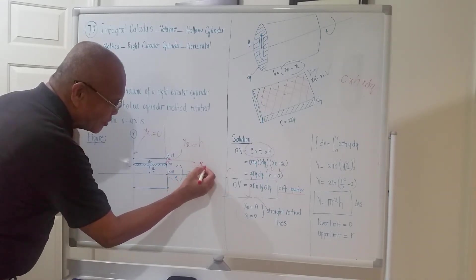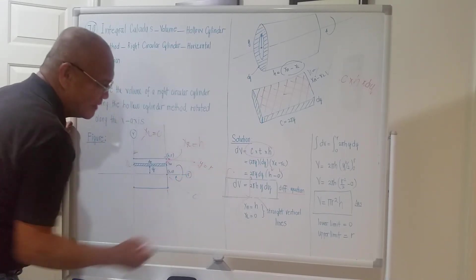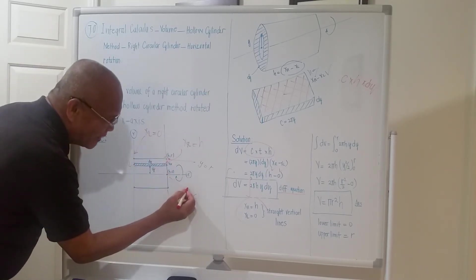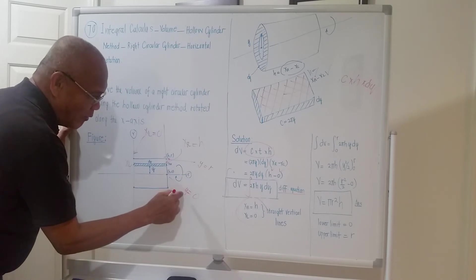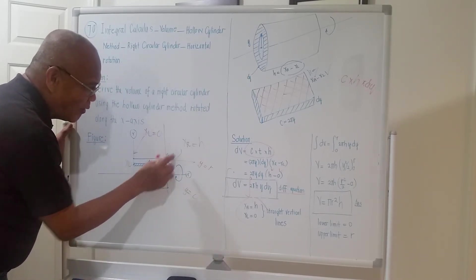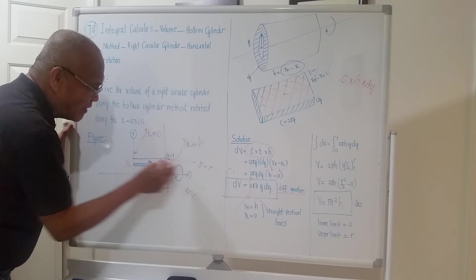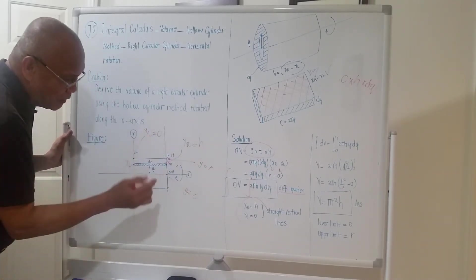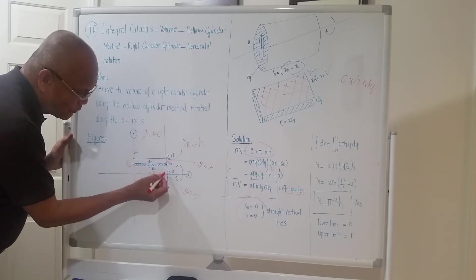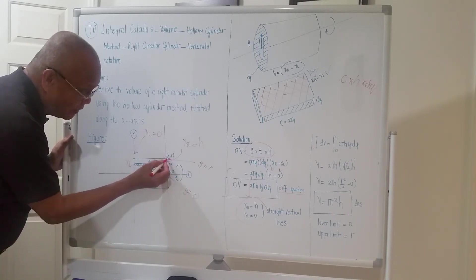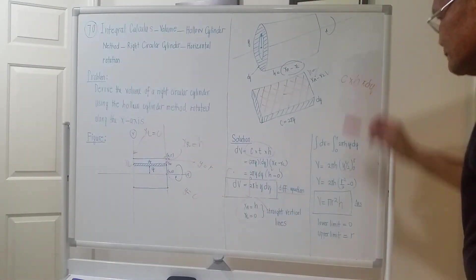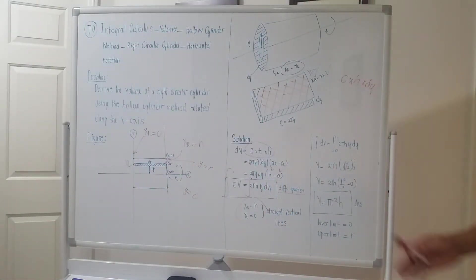Why is the lower limit zero and the upper limit r? Here y is zero on the x-axis, and y is equal to r at the top point. To cover the total half-volume, dy must move from zero to r. That's why the limit on the right-hand side is from 0 to r.